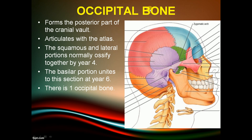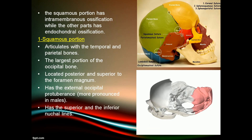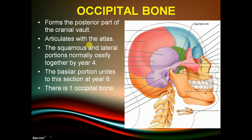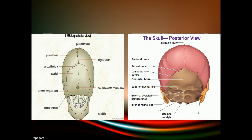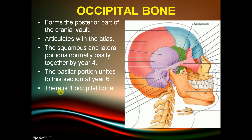The occipital bone forms the posterior part of the cranial vault. The squamous and lateral portions normally ossify together by four years of age, while the basilar portion unites to this section at six years. There is one occipital bone.